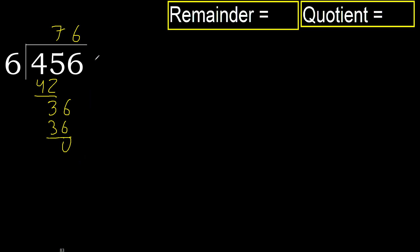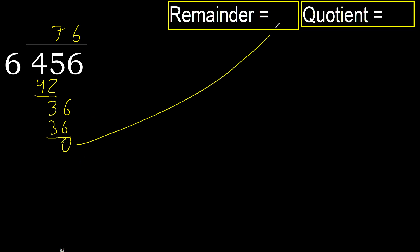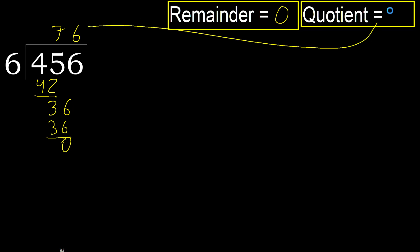Next, there is no number remaining, therefore finish it. 456 divided by 6 is 76.